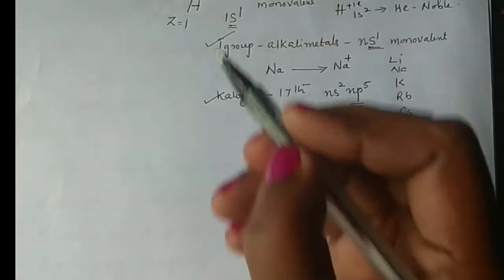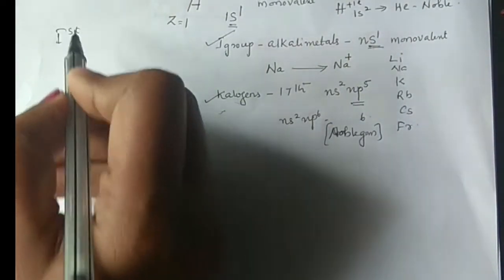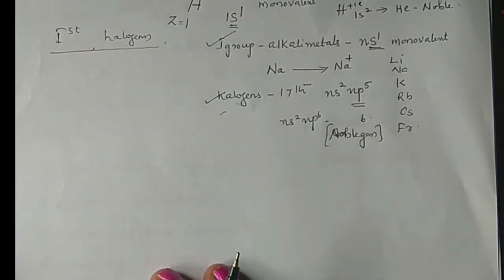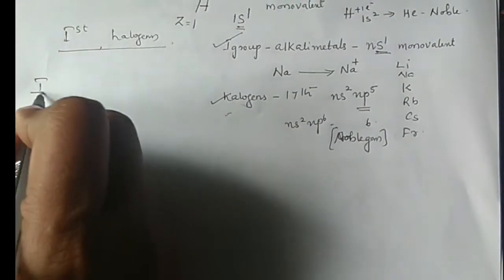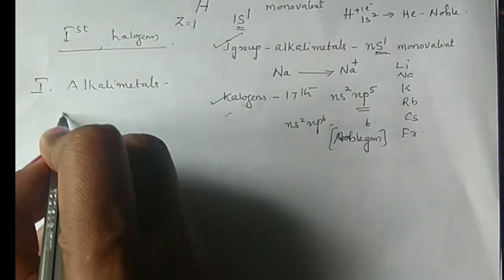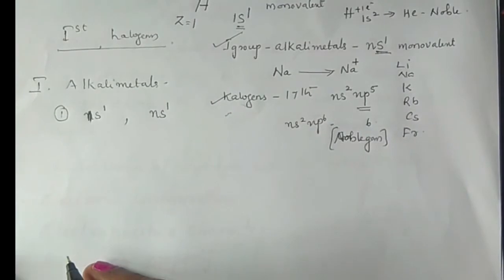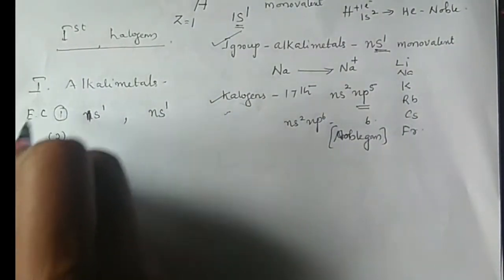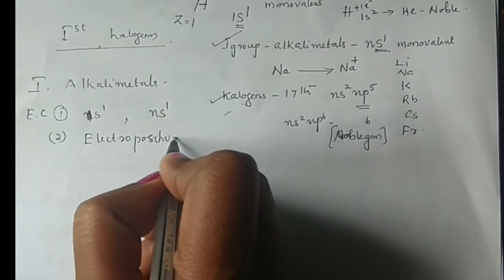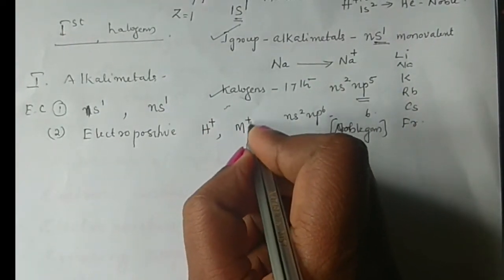These are the similarities between hydrogen and the alkali metals. First, the electronic configuration: hydrogen has 1s1, and alkali metals have ns1 — both have one electron in the outer shell. Second, electropositive nature: just as alkali metals lose one electron to form M+ ions (for example Na+), hydrogen also forms H+ ions.